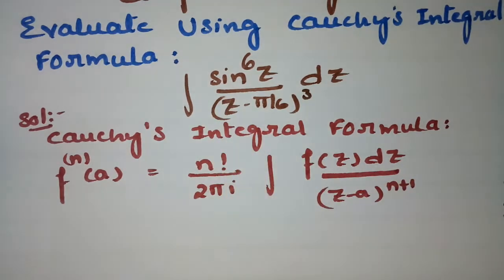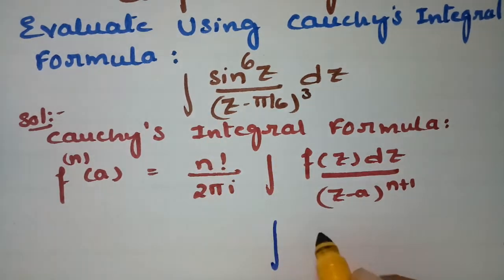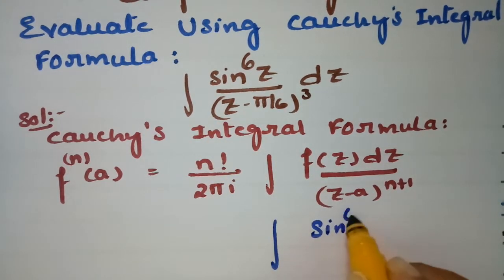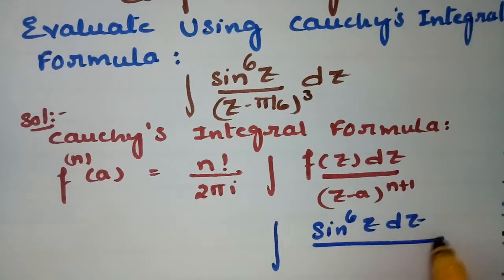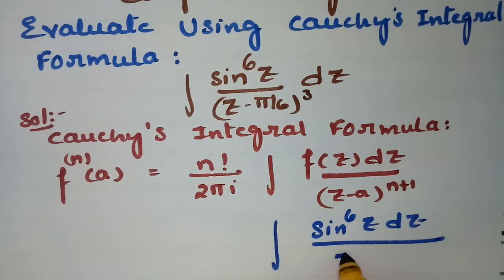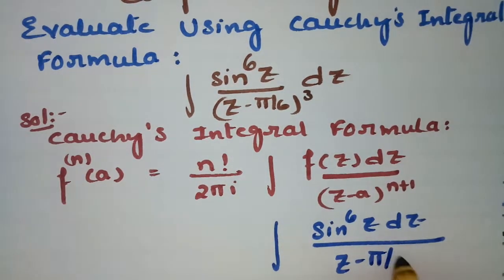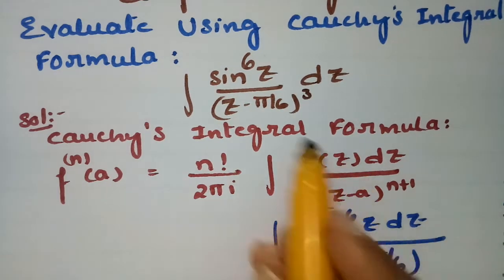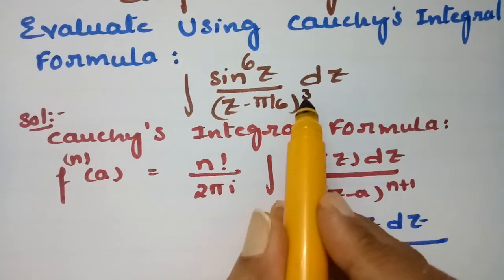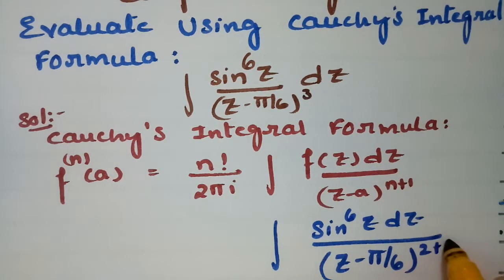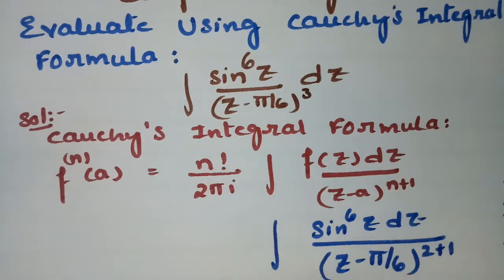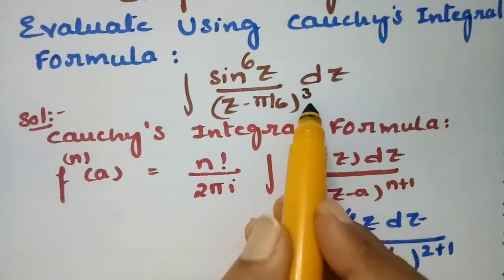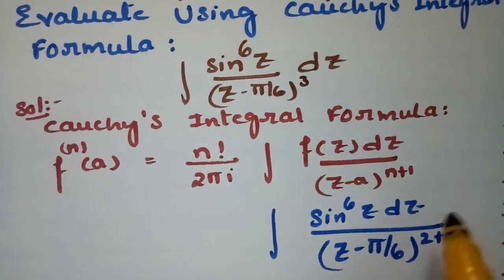Now we have to evaluate this integral. If I compare with the formula, the denominator is (z minus π/6) cubed, and this cube can be written as 2 plus 1. So in order to fit this formula, 3 is written as n+1 = 2+1.